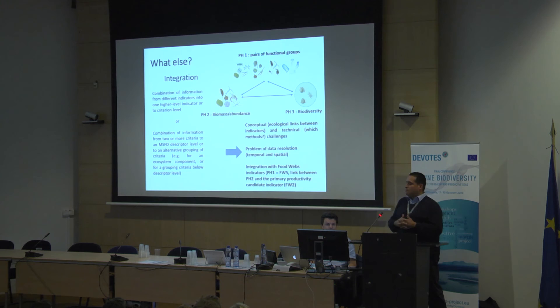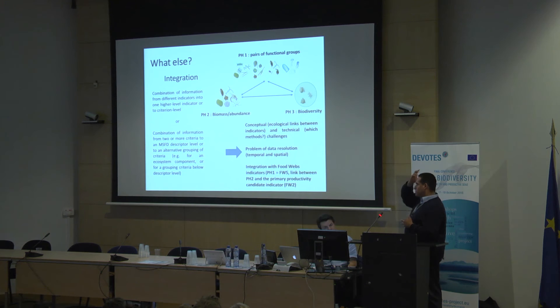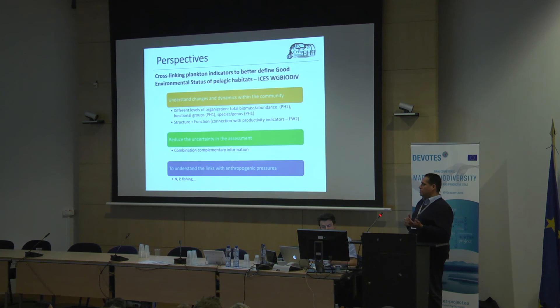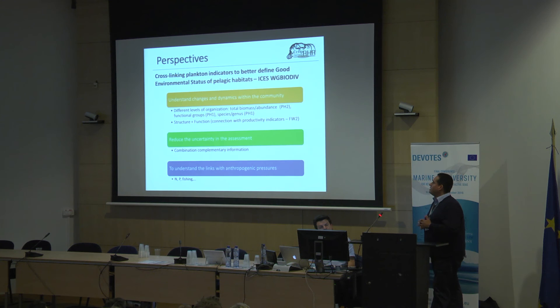Another important aspect is integration — the combination of information from different indicators — which means establishing conceptual ecological links between the three indicators presented here: functional groups, biomass abundance, and biodiversity. Integration is very important, because we talked about that before, with software and processes. The cross-linking of plankton indicators to better define the good environmental status uses different levels of organization — structure and function — in order to reduce uncertainty in the assessment and through the combination of complementary information. That's the work that has been carried out by the different institutions here in collaboration with others.